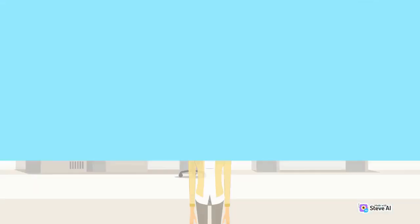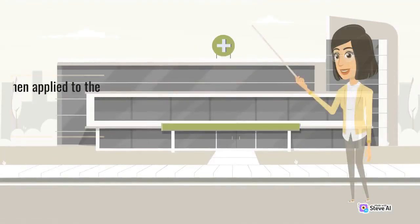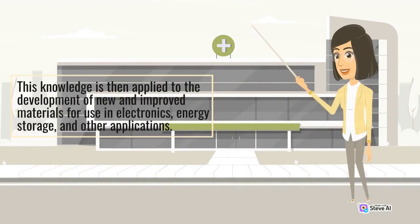Chemical analysis is a critical tool for researchers. In the field of materials science, chemical analysis is used to understand the structure, properties, and synthesis of materials. This knowledge is then applied to the development of new and improved materials for use in electronics, energy storage, and other applications.